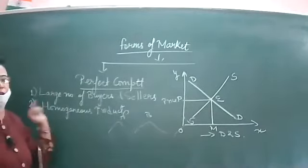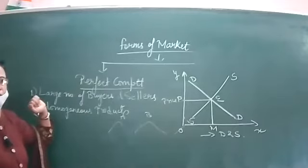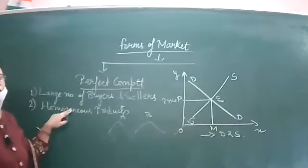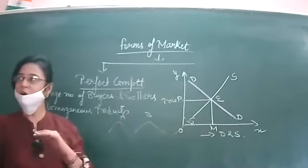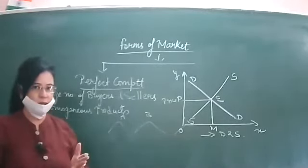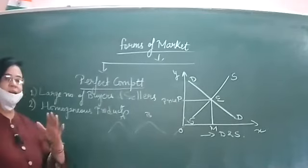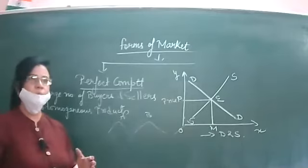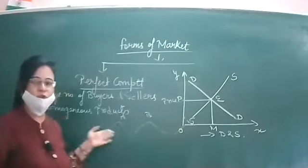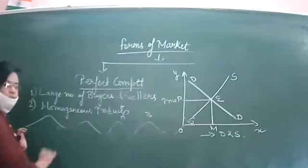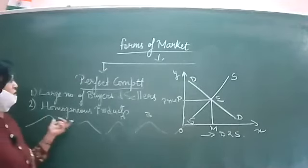Now coming to the second feature: homogeneous products. Only a large number of sellers does not make a market perfectly competitive — they also have to be selling homogeneous products. Homogeneous products are those which are identical in all respects; they cannot be differentiated. The product of one seller cannot be differentiated from that of another seller — they are identical in quality, quantity, and price. Like the wheat of different farmers: you cannot differentiate between heaps of wheat from different farmers; they all look alike.